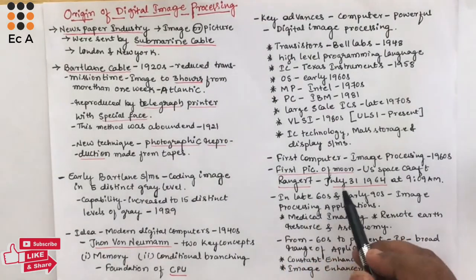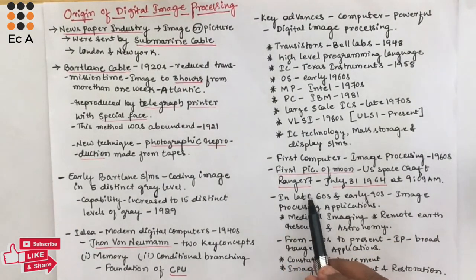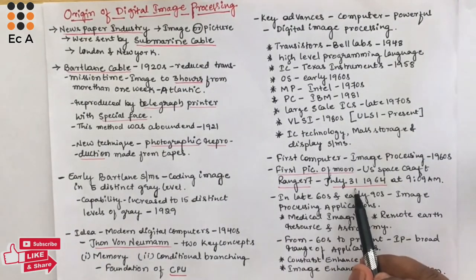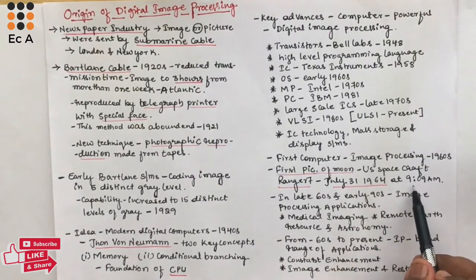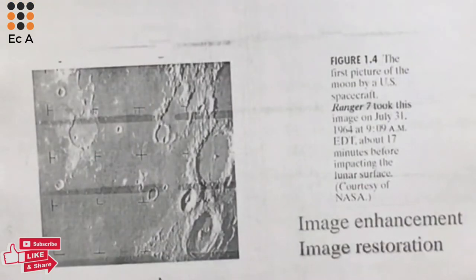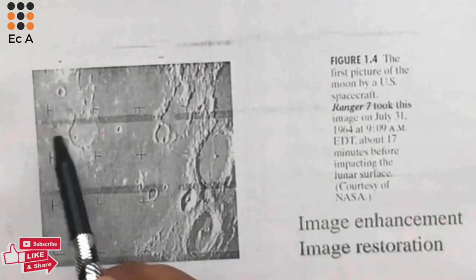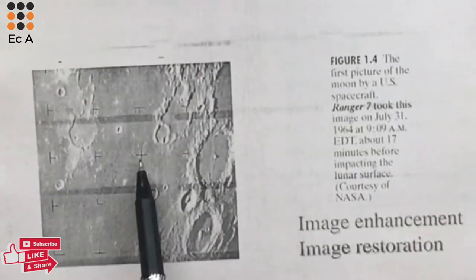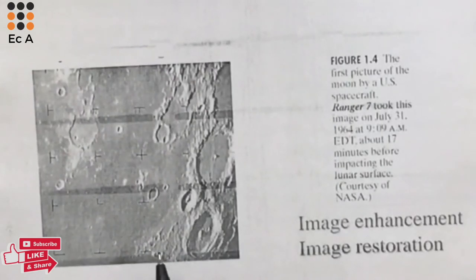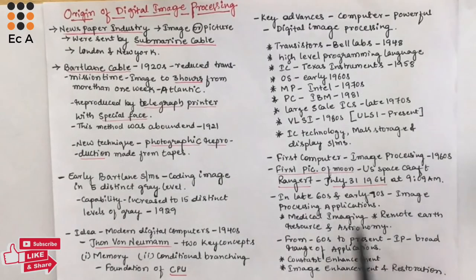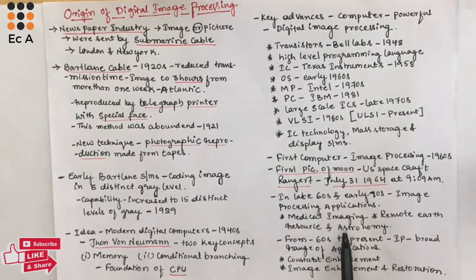The first picture of the Moon by US spacecraft Ranger 7 was captured on July 31st, 1964 at 9:09 AM. Using the dots in these images, the image was enhanced and the resolution was improved in 1964. Image processing applications in the late 1960s and early 1970s were in the fields of medical imaging, remote earth resources, and astronomy.